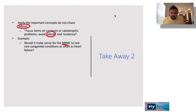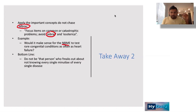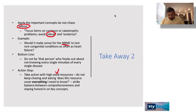Rather than diving into mitochondrial inheritance causing a dilated cardiomyopathy, first master what heart failure is — the physiology, anatomy, and histology changes. Don't freak out about not knowing every minutia of every disease. Use high-yield resources and strike a balance between being comprehensive and staying honed in on key concepts.